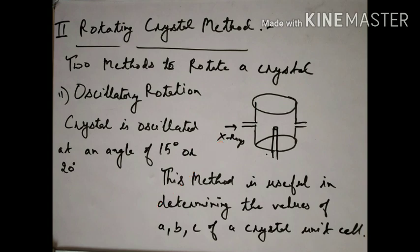The rotating crystal method helps determine the type and orientation of the crystal. From this method, we get to know the lattice parameters a, b, c — the dimensions of the crystal unit cell. So both sub-methods (complete rotation and oscillatory rotation) of the rotating crystal method are now clear.